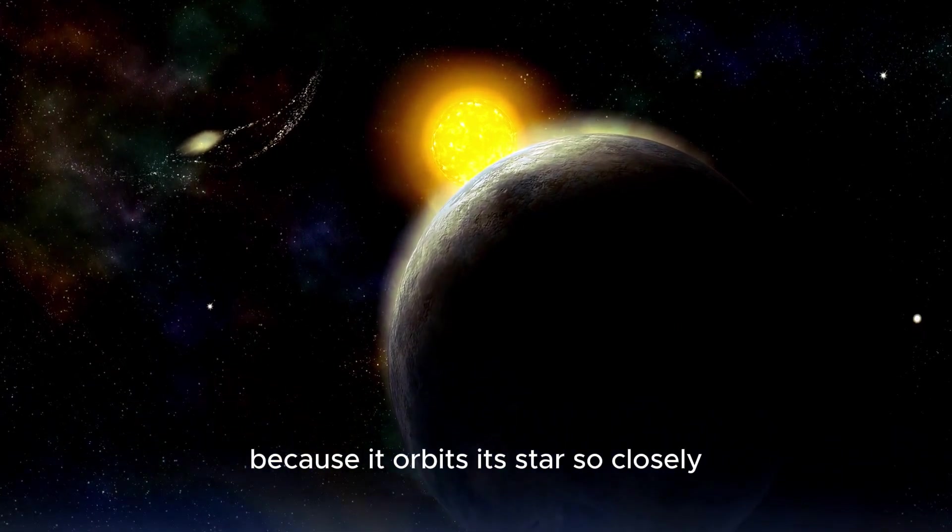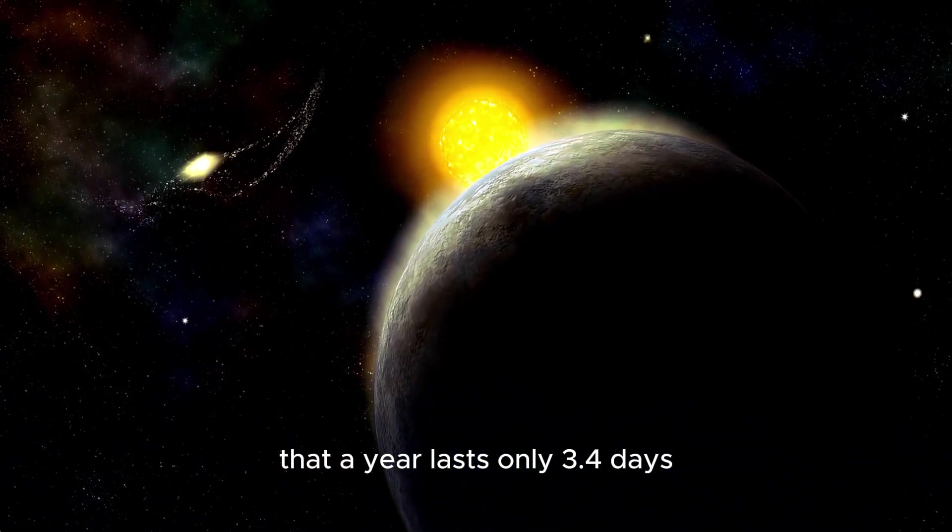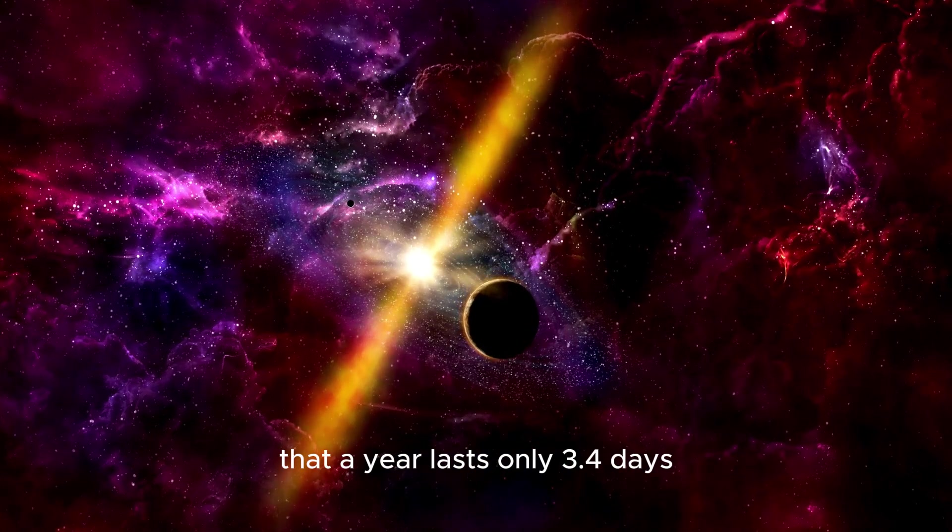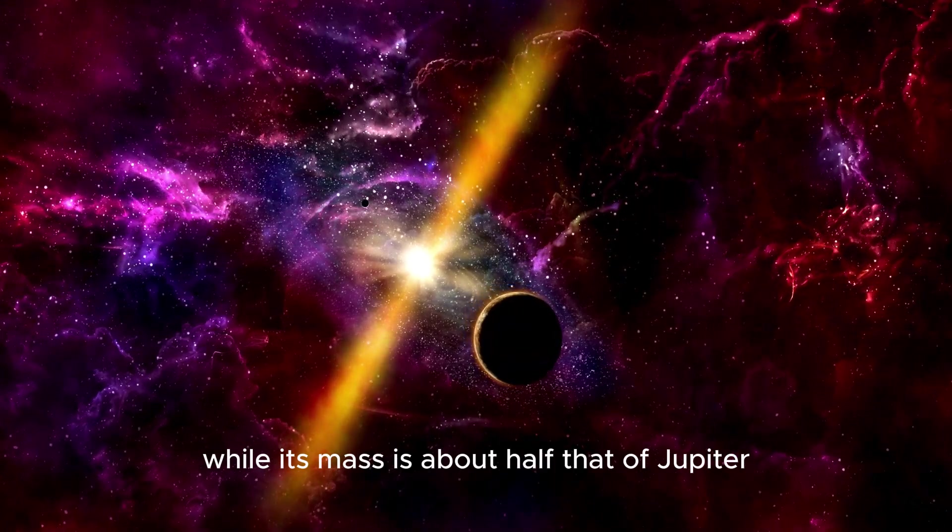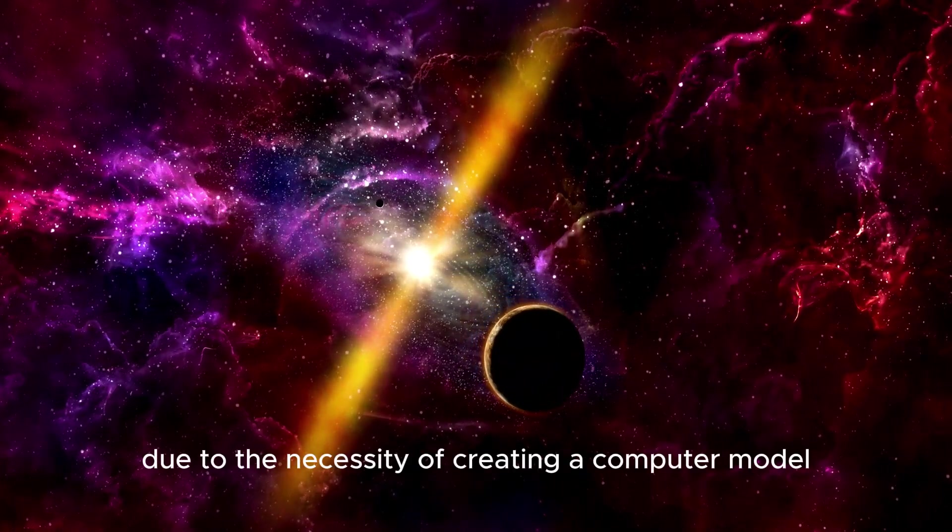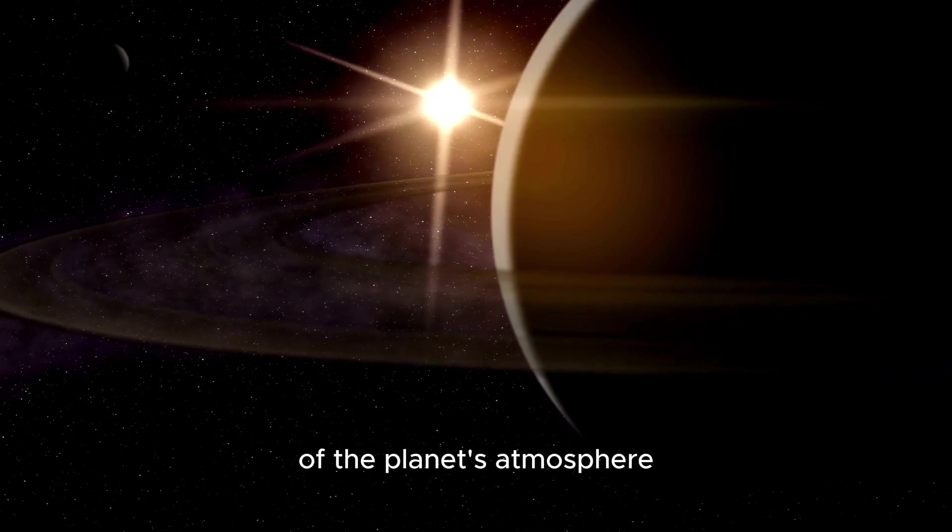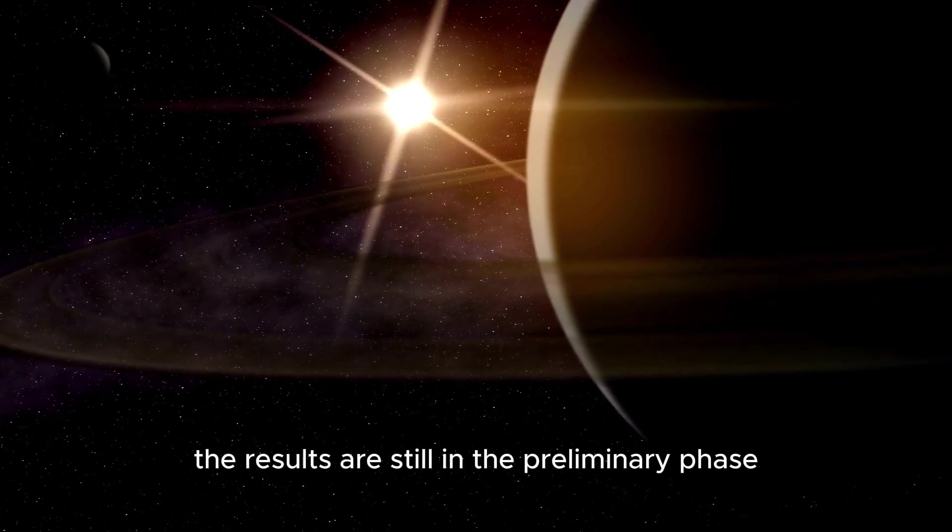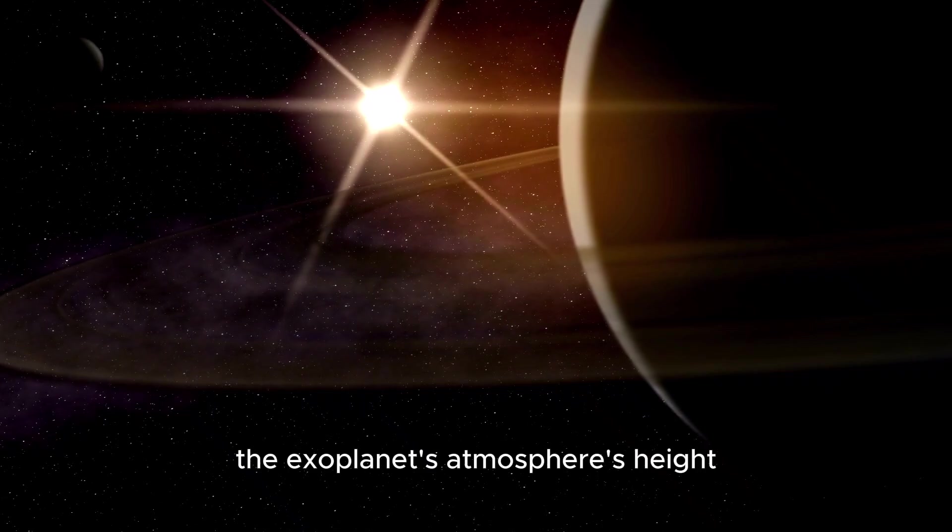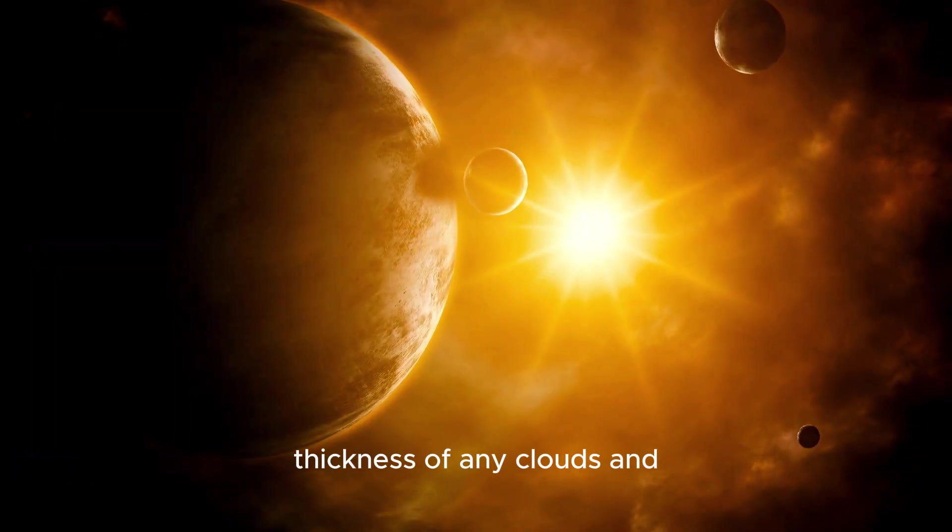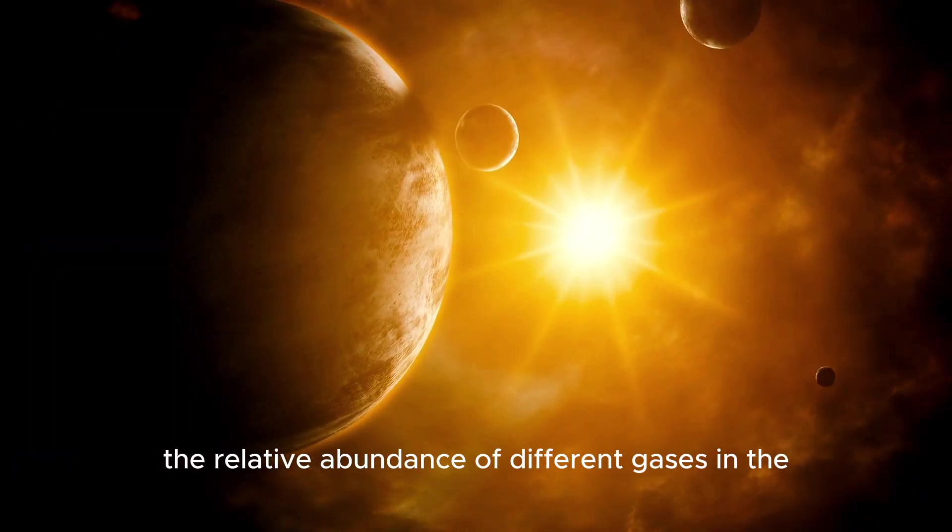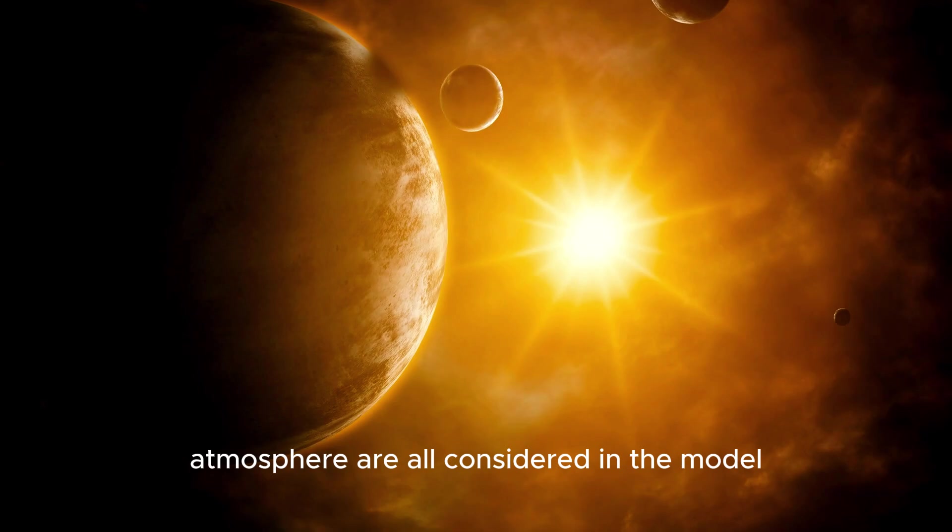The planet is called a hot Jupiter because it orbits its star so closely that a year lasts only 3.4 days, while its mass is about half that of Jupiter in our solar system. Due to the necessity of creating a computer model of the planet's atmosphere, the results are still in the preliminary phase. The exoplanet's atmosphere's height, thickness of any clouds, and the relative abundance of different gases in the atmosphere are all considered in the model.